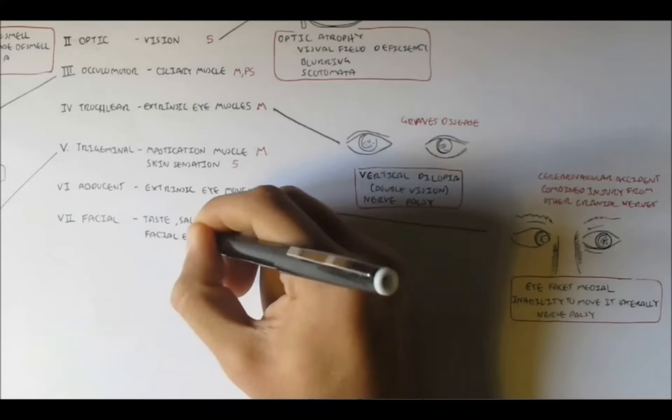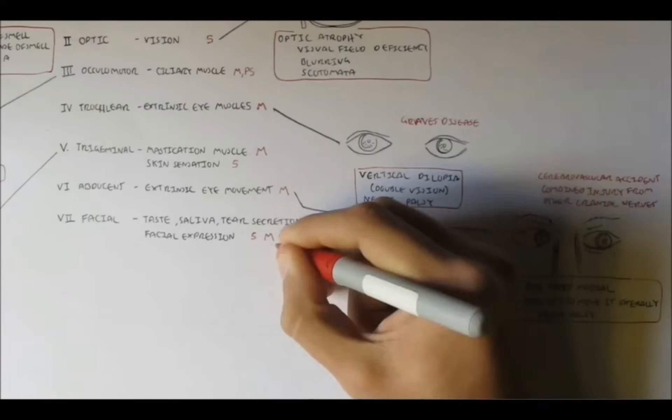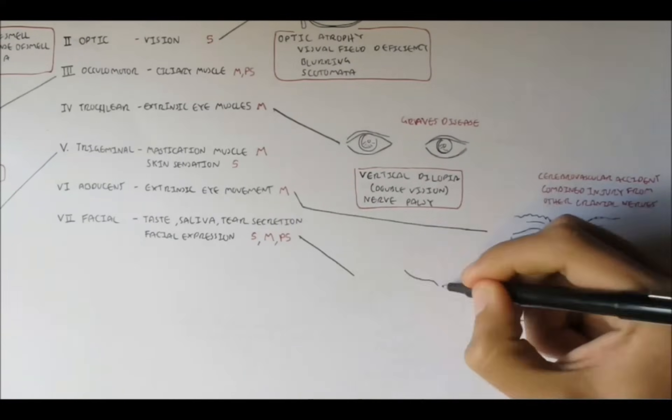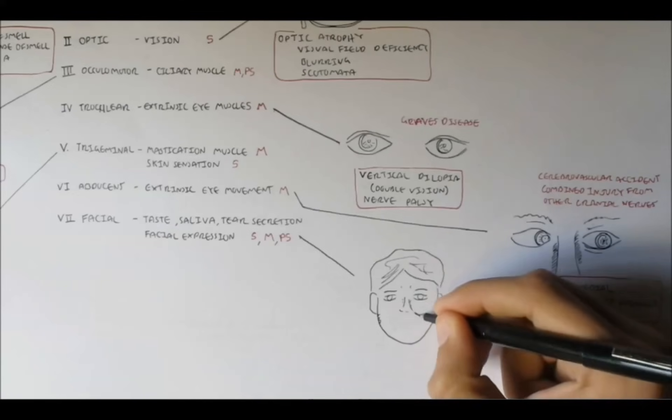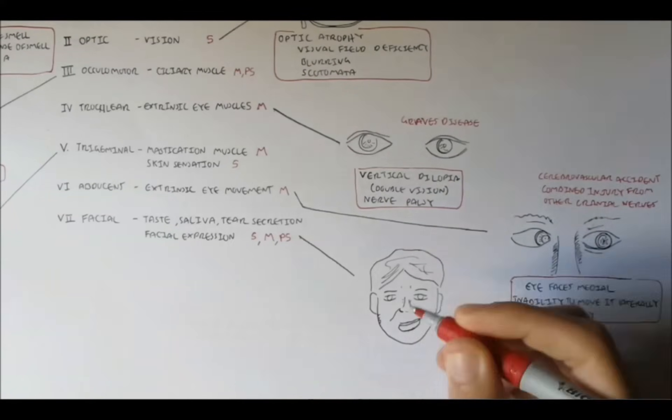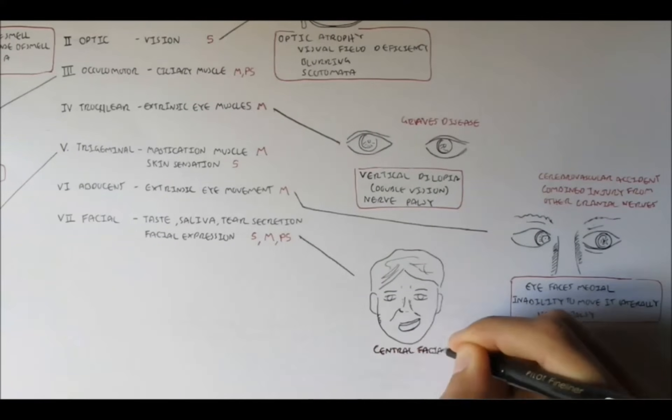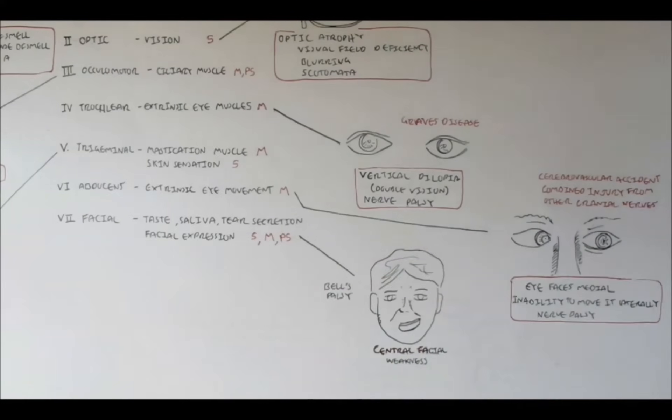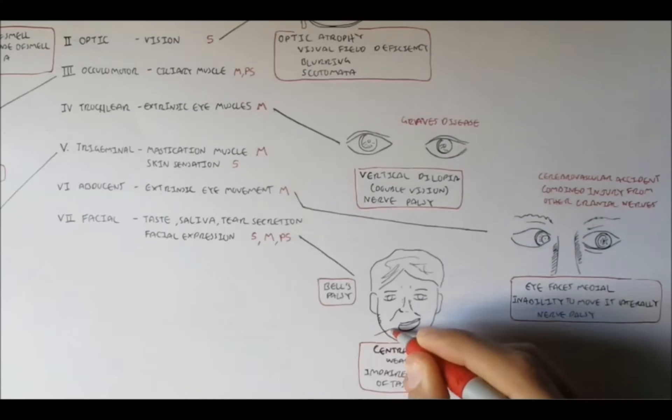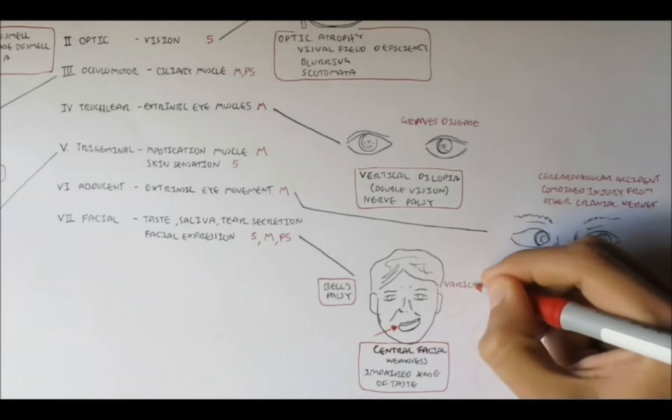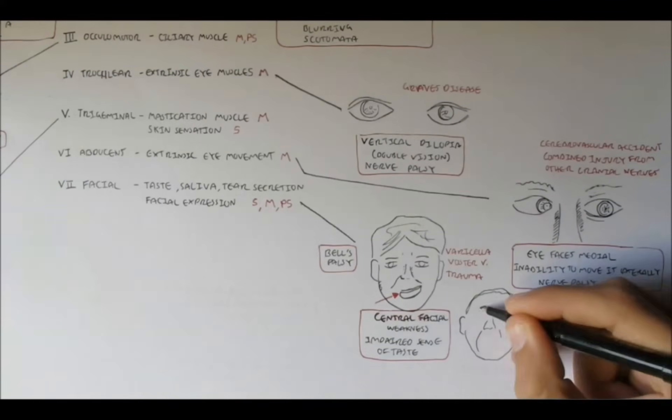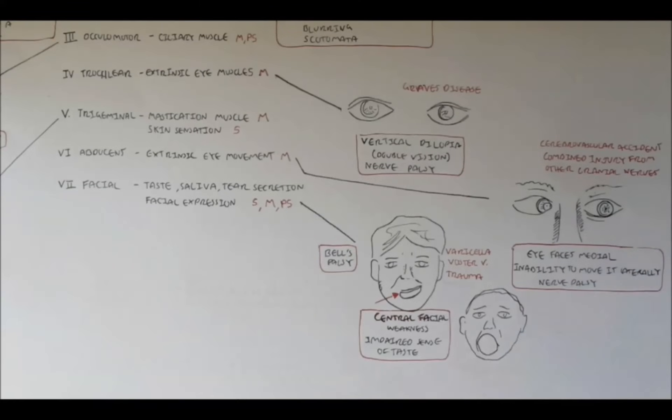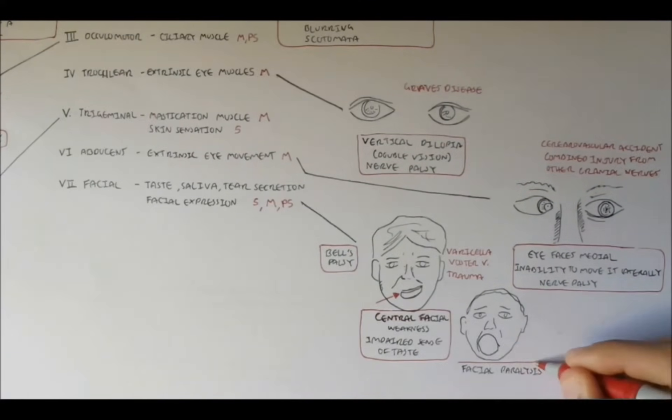Next is nerve 7, the facial nerve, so obviously has to do with the muscle. It is an important nerve for taste, saliva and tear secretion, and also facial expression. It is a sensory nerve, a motor nerve, and with associated parasympathetic controls. Damage to this nerve causes difficulty with facial expression on one side of the face, depending on which of the two facial nerves were damaged. This is referred to as central facial weakness, commonly known as Bell's palsy, where half of the person's face cannot be expressed. Damage to this nerve can also impair the sense of taste. Causes can include vesicular zoster virus and trauma. Severe damage to this nerve can cause face paralysis, a severe condition of Bell's palsy, of half the face.